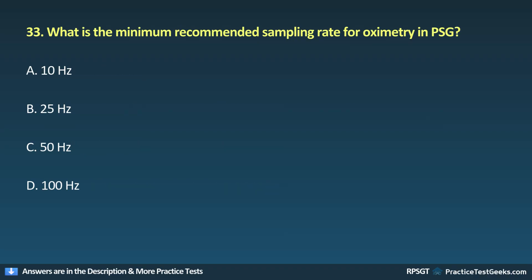Question 33: What is the minimum recommended sampling rate for oximetry in PSG? A. 10 Hz, B. 25 Hz, C. 50 Hz, D. 100 Hz.